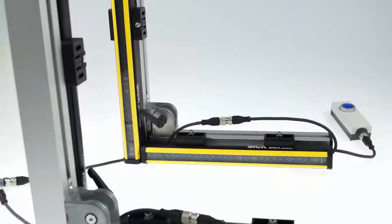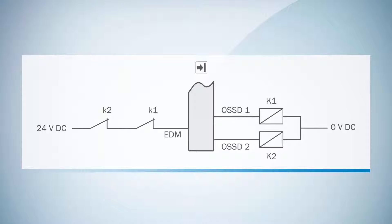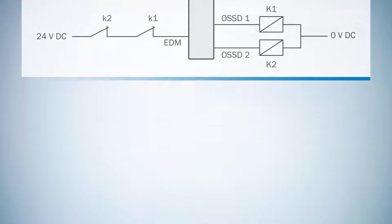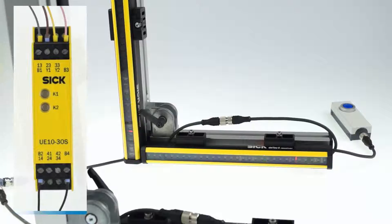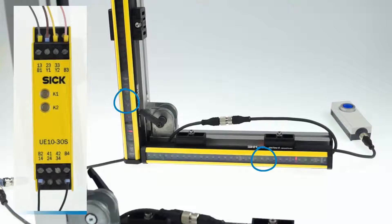The external device monitoring or EDM for short of your system is also easily configured. In the default state EDM is deactivated. Simply wire everything accordingly to the operating instructions and on the next power up the deTec4 will automatically switch into the configuration mode indicated by the green flashing field LEDs. Moreover the LED 1 of the blue alignment LEDs is flashing to show that EDM is configured now.